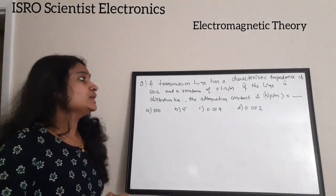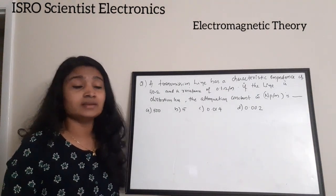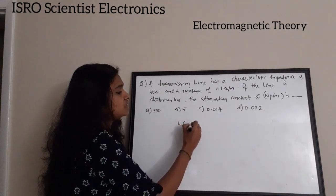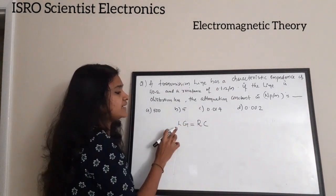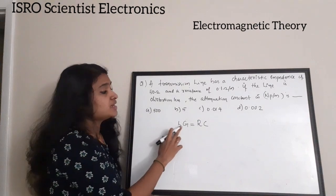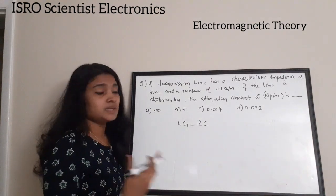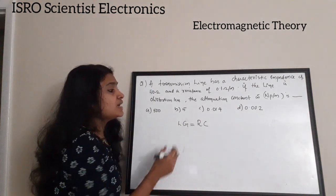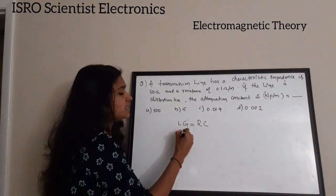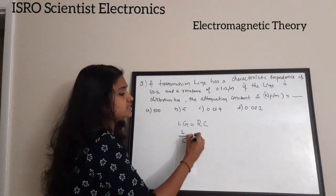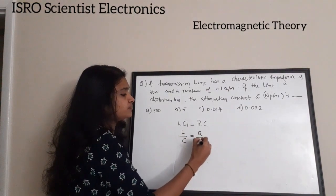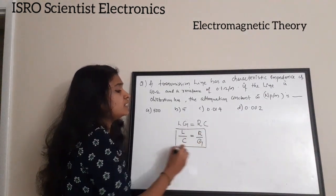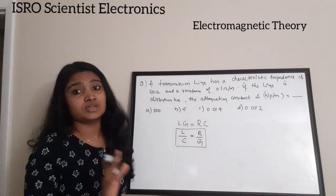For a distortionless transmission line, the condition can be written as LG = RC, where L is the inductance, G is the conductivity, R is the resistance, and C is the capacitance. From this relation we can write L/C = R/G.